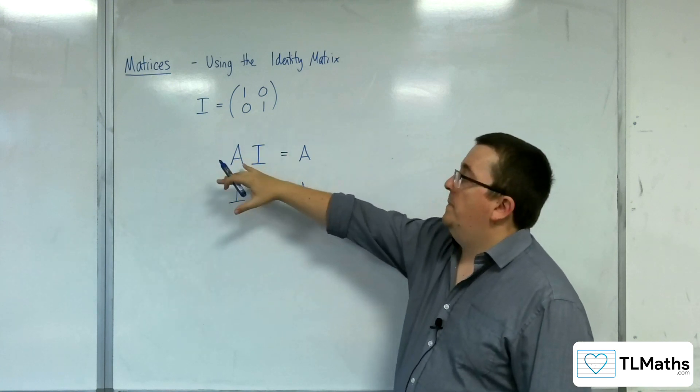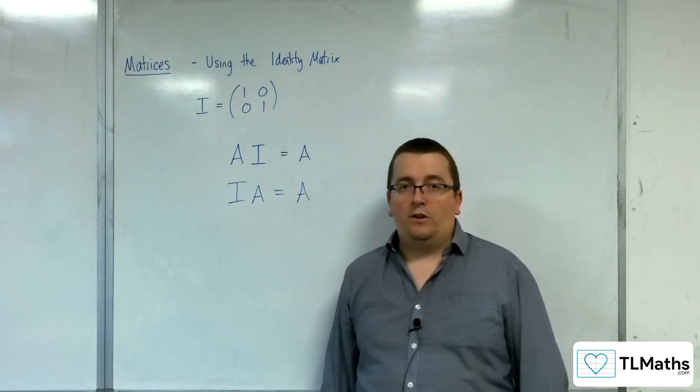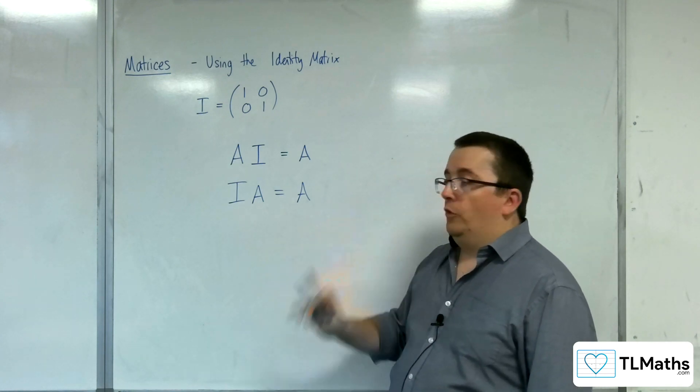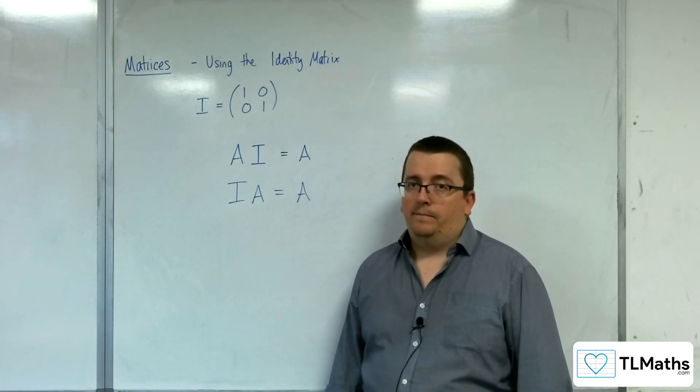any 2x2 matrix or 3x3 matrix, and its corresponding identity matrix, if you multiply them in any order, you still get A.